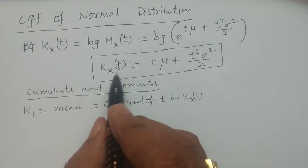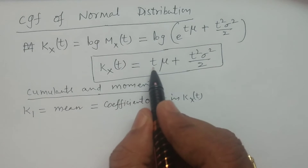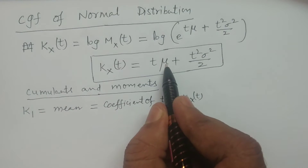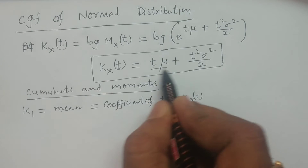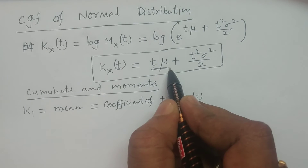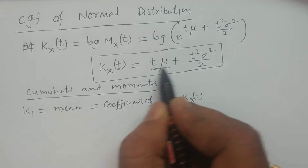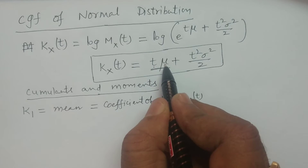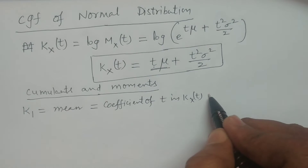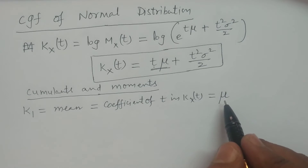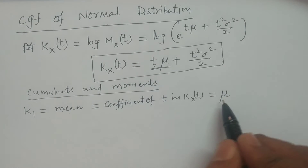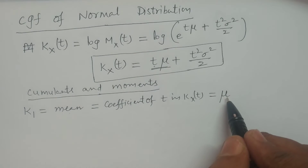In K(x,t), what is the coefficient of t? The term in t is t·μ, so the coefficient is μ. Therefore k₁ is equal to μ. What is μ of the normal distribution? It is the mean. So the mean of the normal distribution is μ, as we have discovered from this.